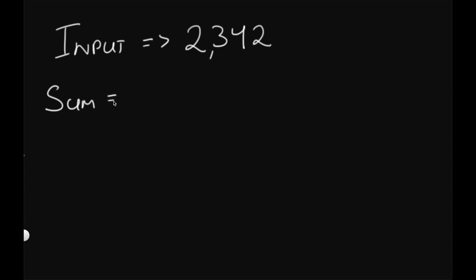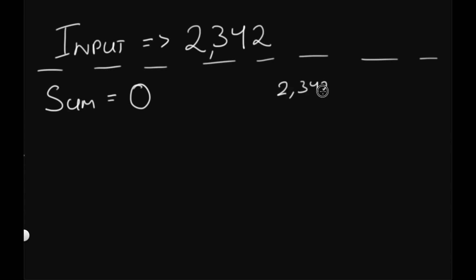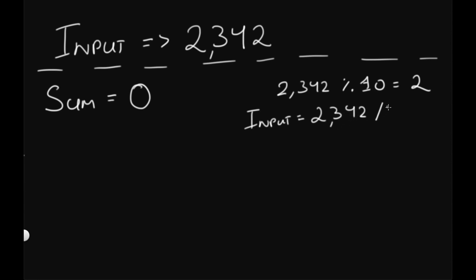We'll have a variable called sum starting at 0. To get each digit, we take the input value and do mod 10. So 2342 mod 10 gives us 2 — that's the last digit. Then we update the input using integer division by 10: 2342 divided by 10 gives 234.2, but integer division drops the decimal, so our input becomes 234.